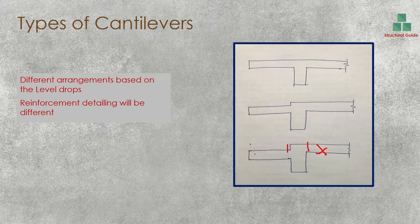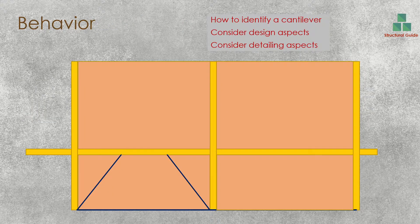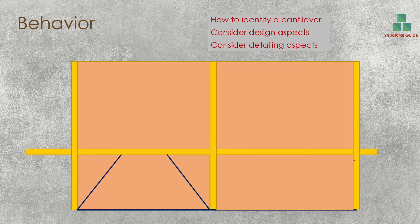Before doing the detailing or analyzing, we have to be aware of the behaviour of the cantilever slab — without knowing this you may make a lot of mistakes. The yellow lines indicate the beams and the blue lines are the edge lines.